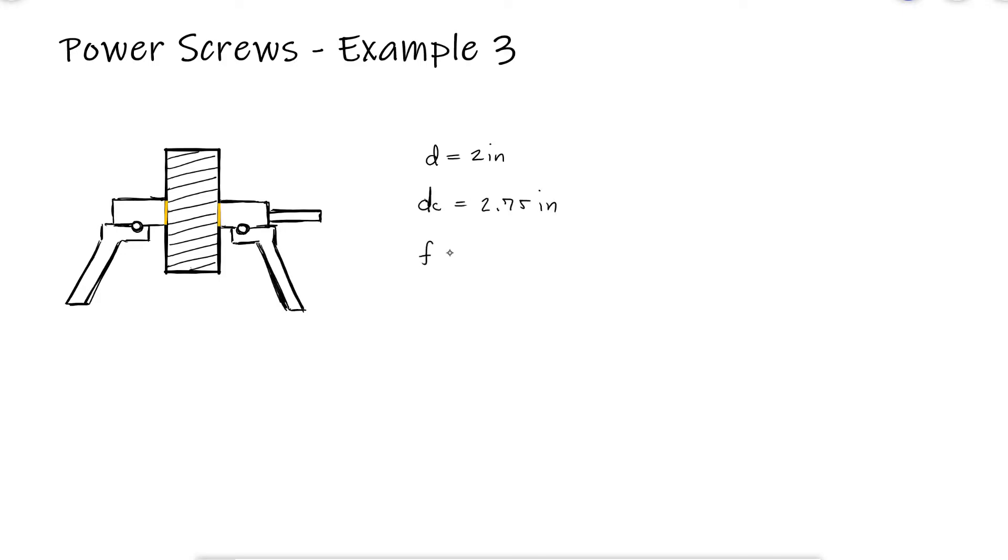The friction coefficient is 0.1 for the threads and the friction coefficient at the bolt bearing type contact between the rotating nut and the collar is 0.04.